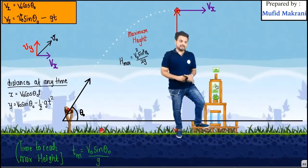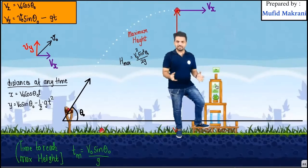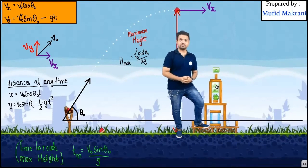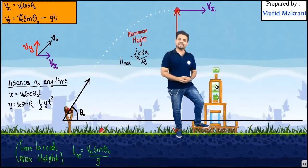And my x velocity always remains constant and the distance x at any instant can be given with the formula x is equals to v naught cos theta naught into t.